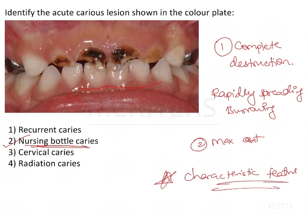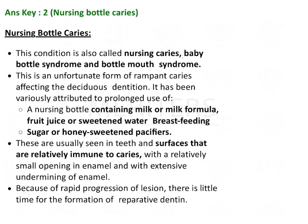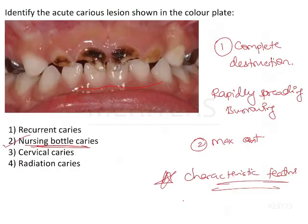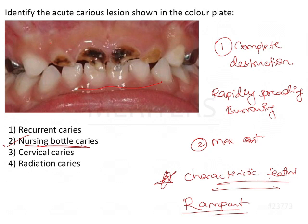On the basis of these points we can identify that the image is of nursing bottle caries. It is also known as baby bottle syndrome or bottle mouth syndrome. This usually occurs because when the child is fed while sleeping, the milk, juice, or pacifier retained in the mouth after the child falls asleep is not cleared away, initiating the caries attack. This is a type of rampant caries, so once initiated it spreads very rapidly and involves the upper anterior teeth.